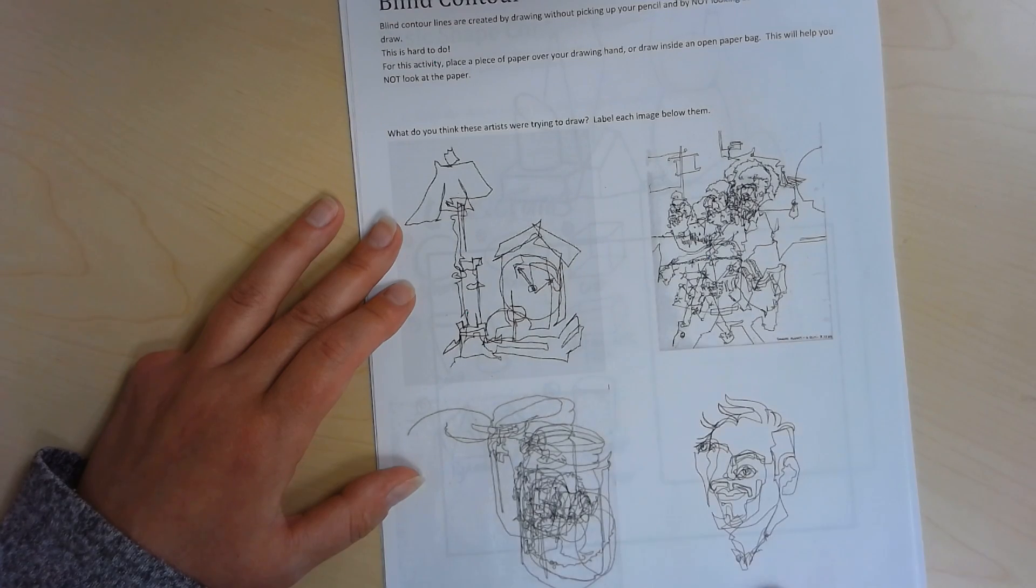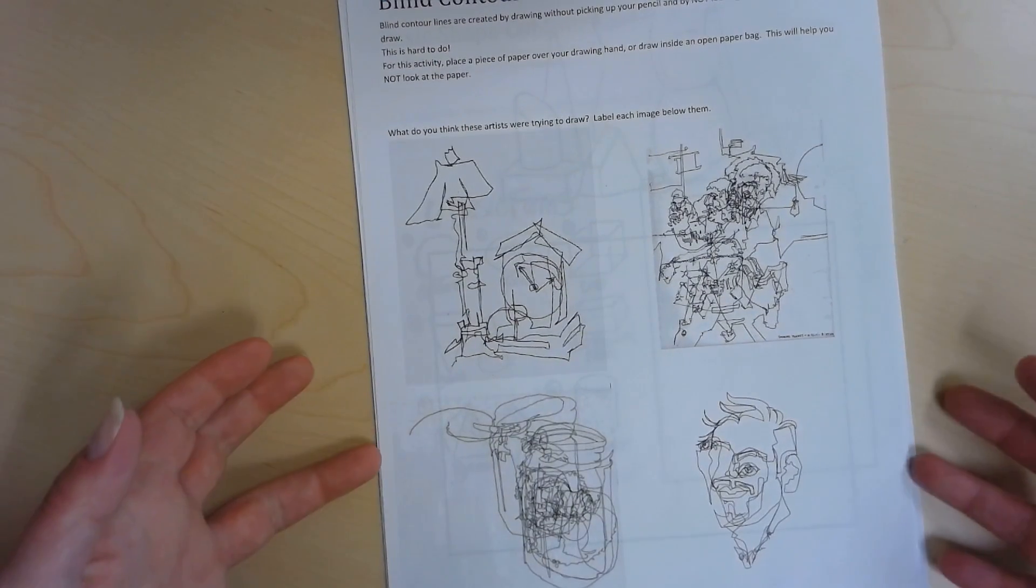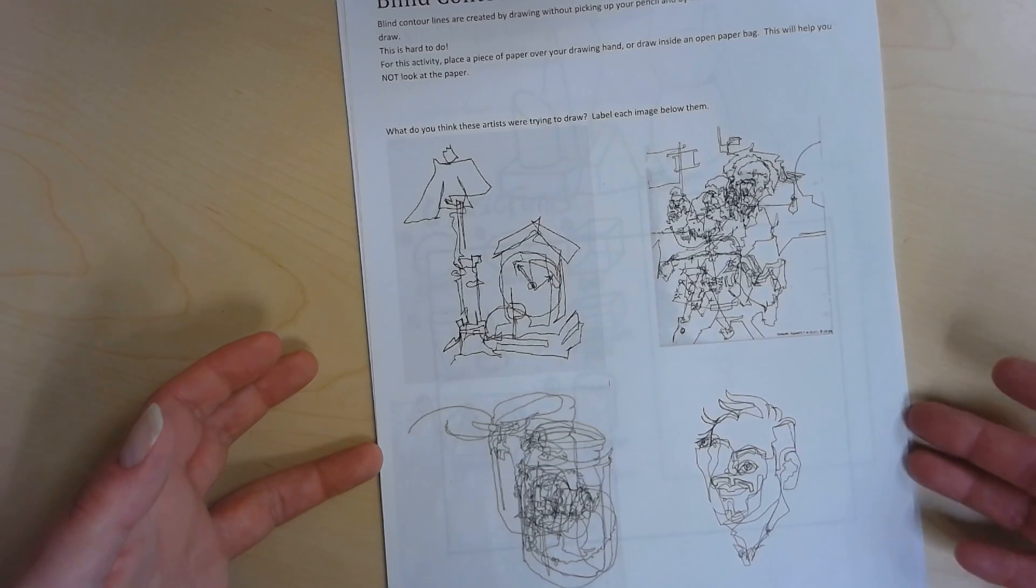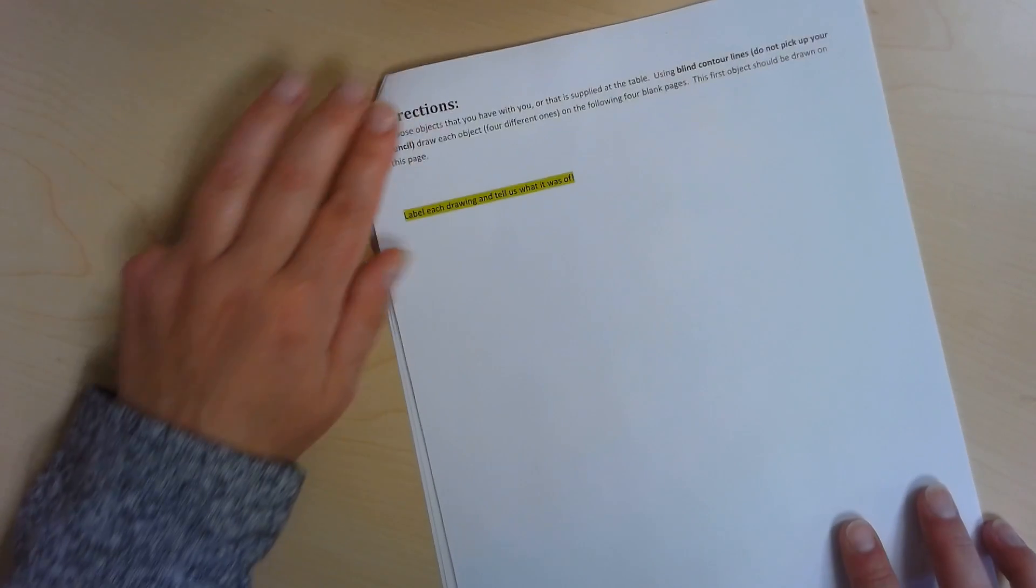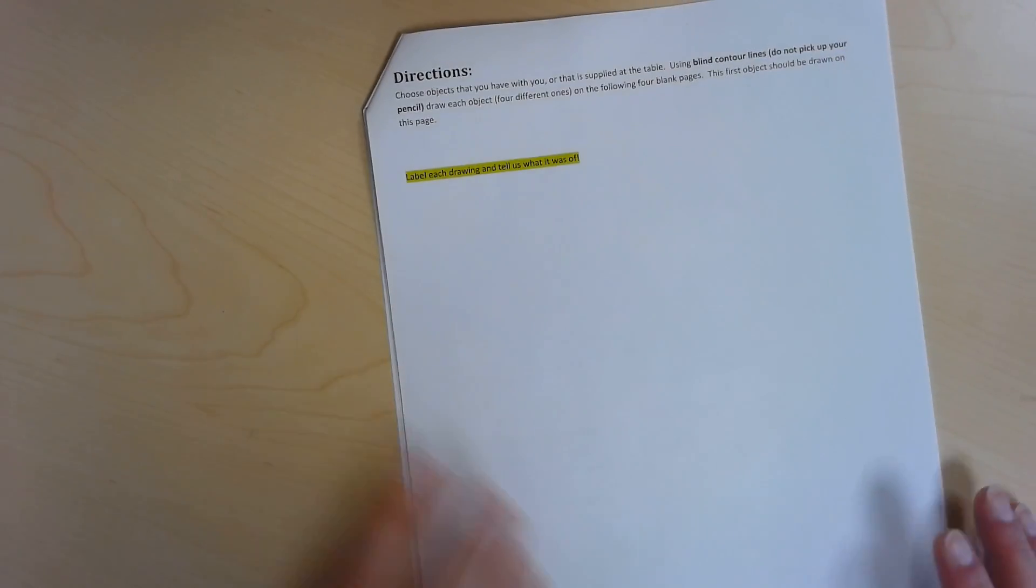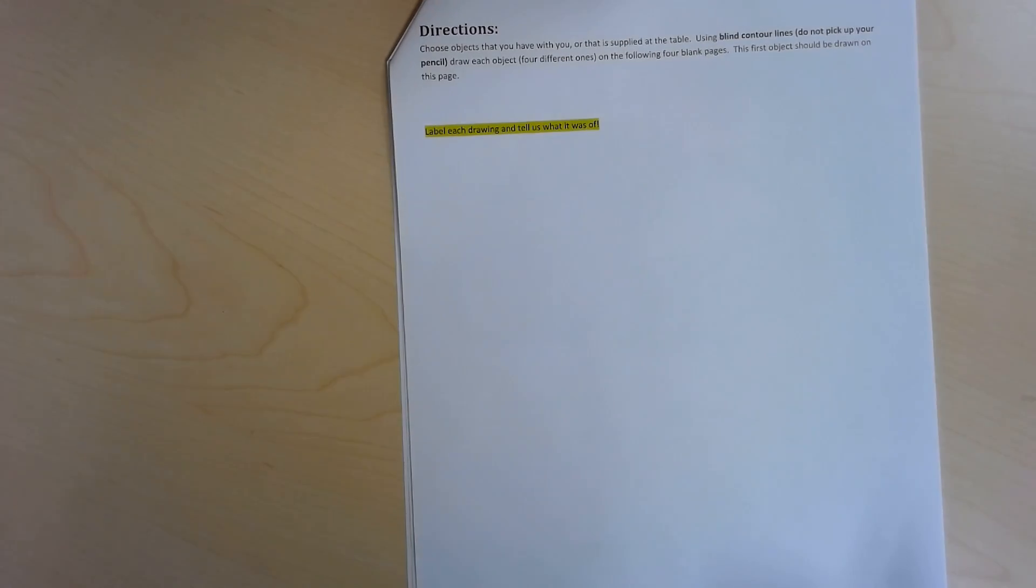Below each drawing, each four of these drawings. Some of them are a little bit easier than others to figure out. When you're done with that, now it's your turn to do some blind contour drawings. So the things to keep in mind: you don't look at the paper, you only look at the thing you're drawing, you do not erase anything.